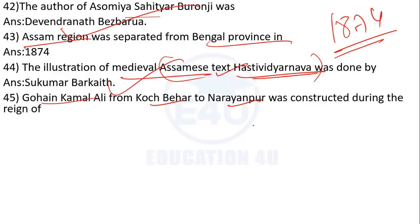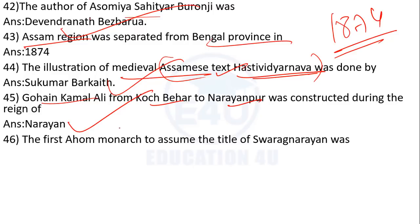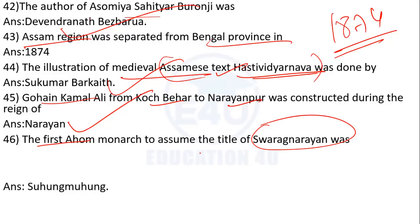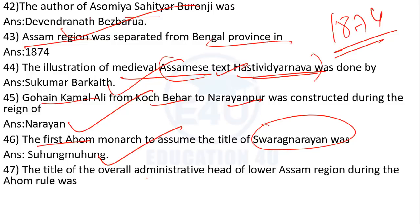The first Ahom monarch to assume the title of Sarva Narayana — who was the first Ahom king to take the title Sarva Narayana? The answer is Suhung Nuhung (Dihingia Raja).